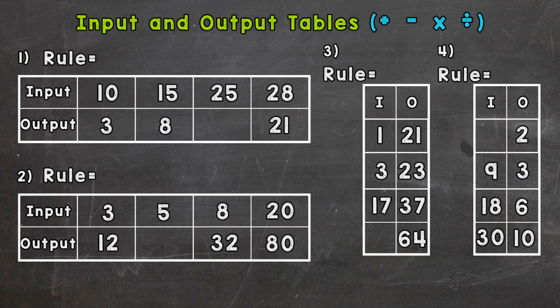We have four tables on your screen, one of each: addition, subtraction, multiplication, and division. Each table has a blank portion that we need to fill in based on the rule that we need to find.